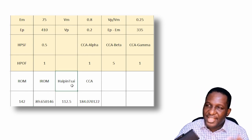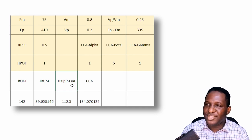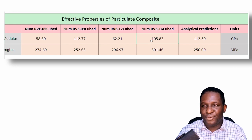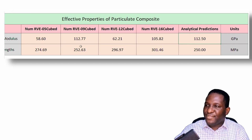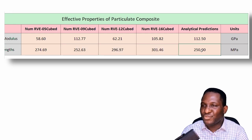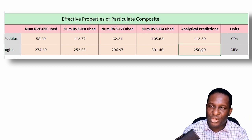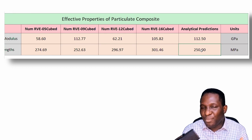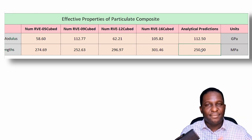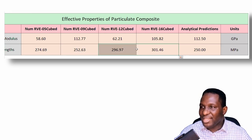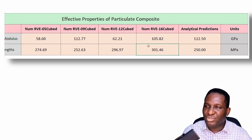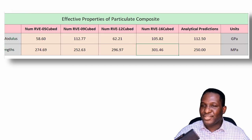For analytical comparison, I used the rule of mixtures, the inverse rule of mixtures, and the Halpin-Tsai equation, with silicon carbide and aluminium material properties and a shape factor and orientation factor. Analytically, the predicted Young's modulus is between 90 and 110 GPa depending on the method. We find that with increasing RVE size, the simulated Young's modulus begins to approach the analytical prediction. For strength, the matrix analytical baseline is 250 MPa; with particle addition the strength increases, stabilizing around 300 MPa for the larger RVEs.